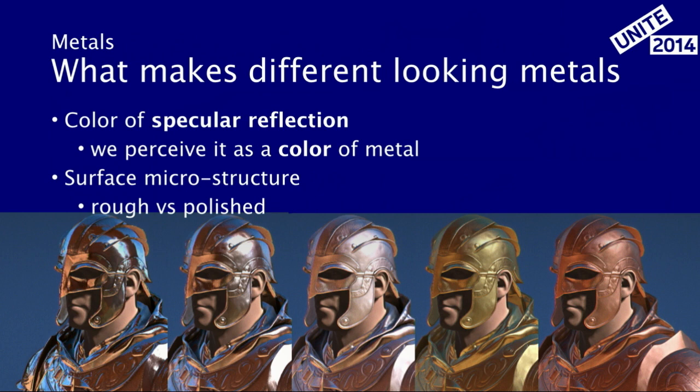You can see the examples here — it goes from basically a chromy look to more rough. The same with these three images: the same silver-ish kind of metal with just different amounts of roughness on them. And here it's more of a golden copper — you can see the tint a little bit in the color.